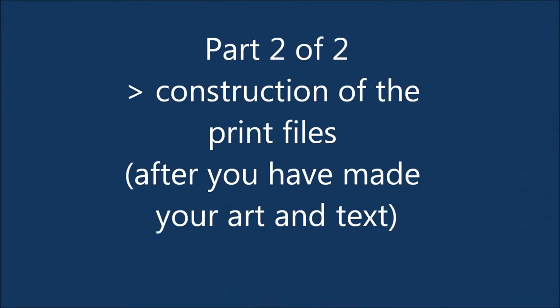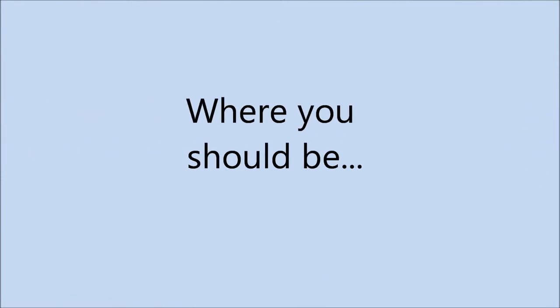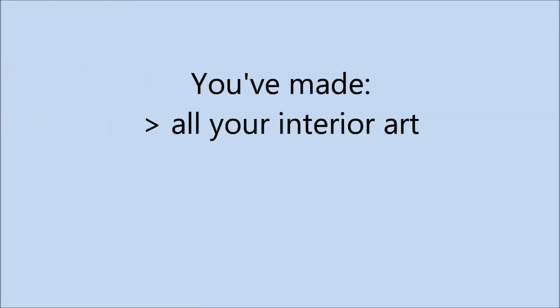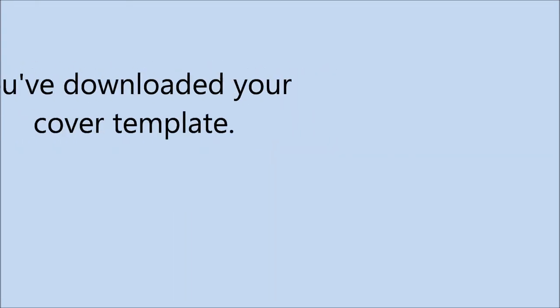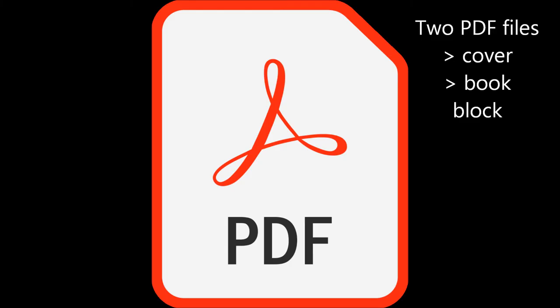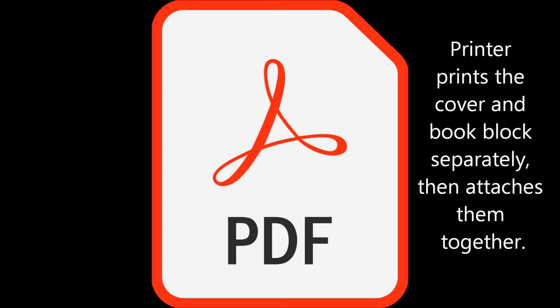This is part two of two, which covers the construction of the print files after you have your art and text ready to go. Part one covered the planning of the book block and cover, so you could begin or finalize work on your art and text. You are going to create two PDF files — one for the cover and one for the book block. You will then give these to your printer, probably by uploading them through your printer's website. Your printer will print the cover and book block separately and then attach them together. That is why there must be two separate PDF files.